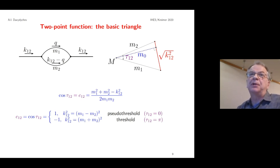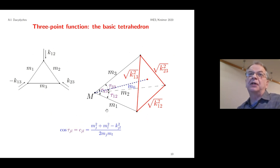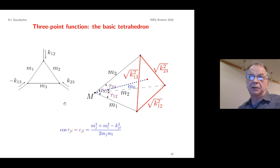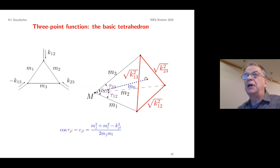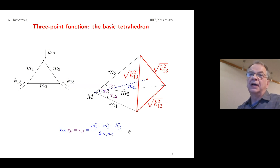For the three-point function the situation is a bit more complicated. We have three independent external momentum invariants and three masses. The geometrical picture gives a three-dimensional tetrahedron: three sides are associated with masses m₁, m₂, m₃, and three sides shown in red are associated with the absolute values of the three external momenta. We drop a perpendicular from one vertex onto the triangle formed by the momentum invariants, and here we have three angles whose cosines are defined accordingly.